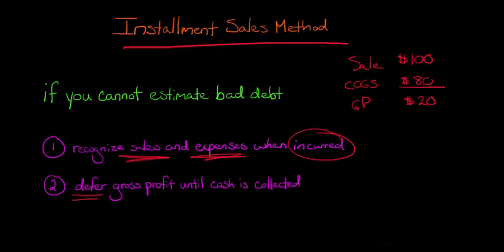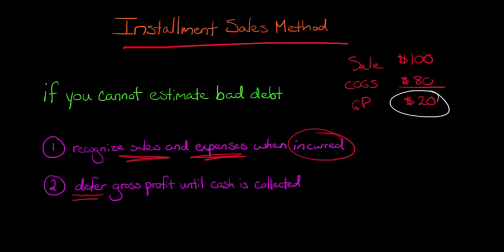Normally, we'd have $20 of profit going down to the bottom line on our income statement. However, with the installment sales method, we're not going to recognize this $20 yet — we're actually going to defer it. We're going to recognize the $100 in sales and the $80 in cost, but we're going to defer this $20 until we actually collect some cash. We haven't collected any cash yet and we don't know how much bad debt to estimate.